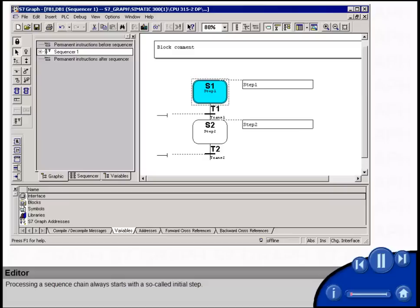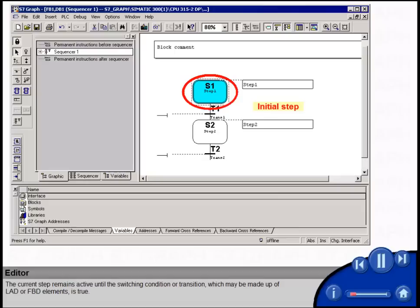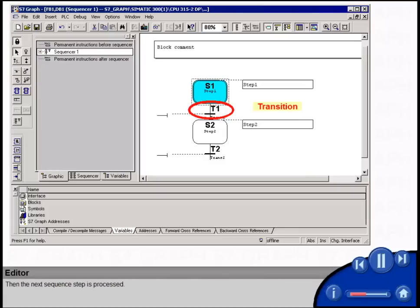Processing a sequence chain always starts with a so-called initial step. The current step remains active until the switching condition or transition, which may be made up of Ladder or FBD elements, is true. Then the next sequence step is processed.